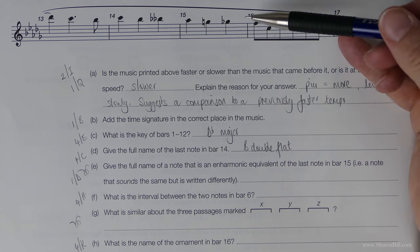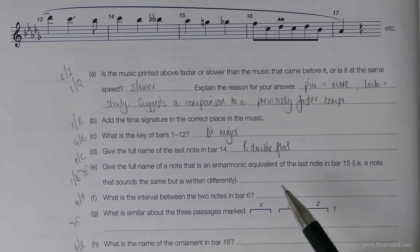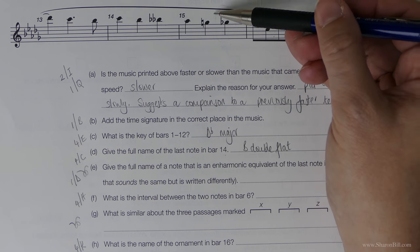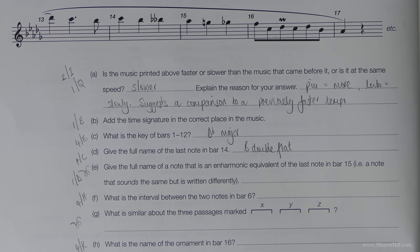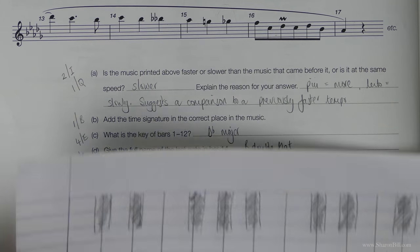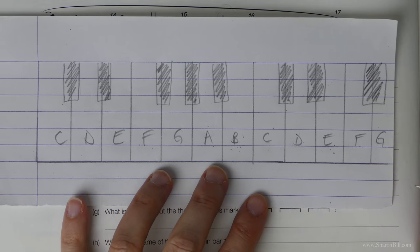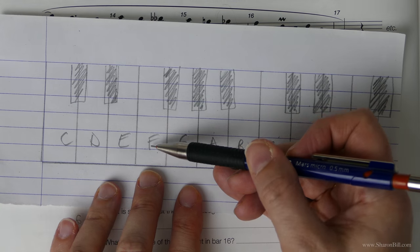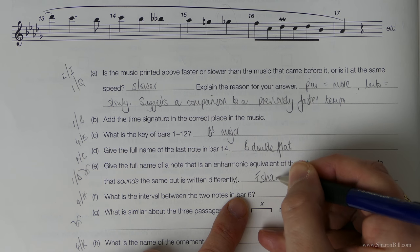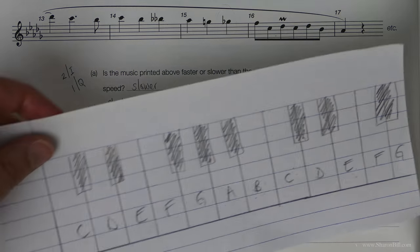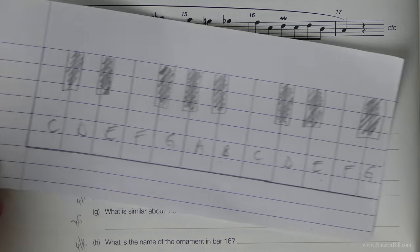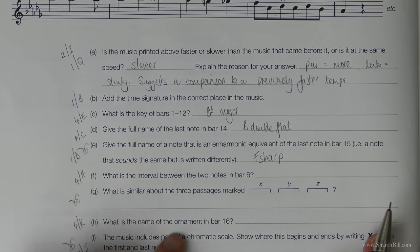So the next question gives the full name of a note that is an enharmonic equivalent of the last note in bar 15. So we're referring to this note here. So we need it to sound the same, but give it a different name. It's written differently. So here it's written as a G flat. And so you might find it's helpful to just have your piano keyboard to help. So just sketch it out on the page if you want to. In an exam you'd always have a piece of scrap paper. So G flat could also be referred to as F sharp. So that's our enharmonic equivalent. I suppose you could get really complex and call it an E double sharp. That would be another alternative, but F sharp is easy enough to get to.